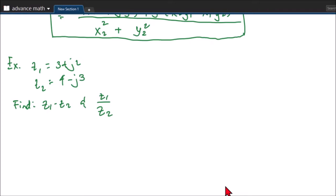So we have here our example for elimination of subtraction and division of complex numbers. So we have Z1 equals 3 plus J2 and Z2 equals 4 minus J3. So we have to find Z1 minus Z2 and Z1 over Z2.